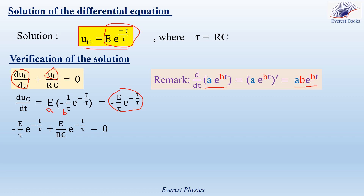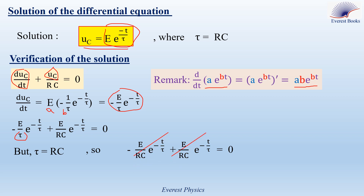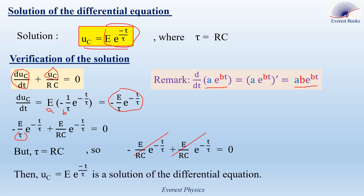Substituting, we get: minus E over tau times e^(-t/tau) plus E over RC times e^(-t/tau) equals 0. Since tau equals RC, replacing tau by RC gives two terms with the same absolute value but opposite signs, so they cancel out. This confirms that UC equals E times e^(-t/tau) is a solution of the differential equation.